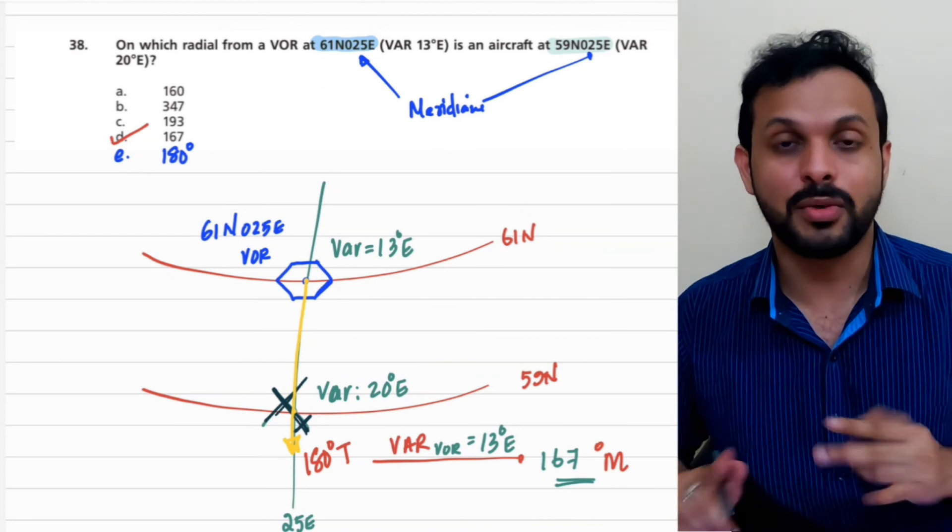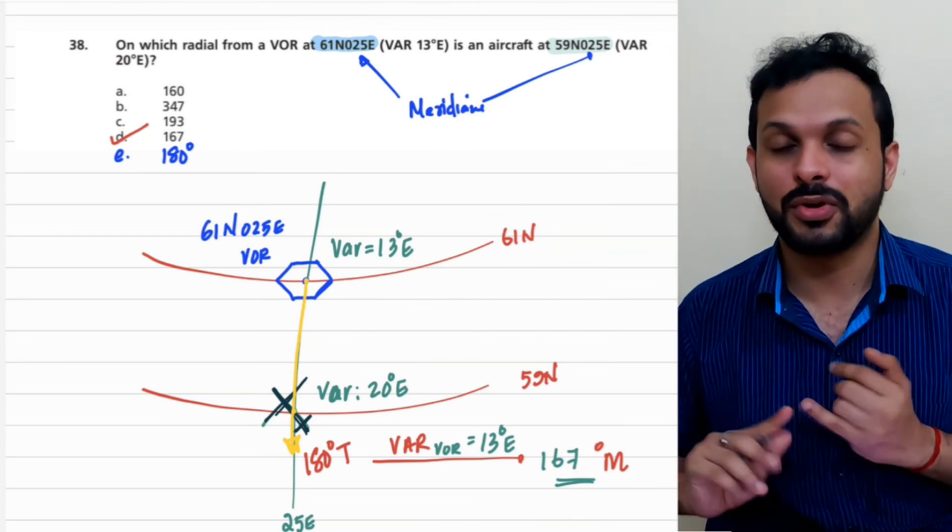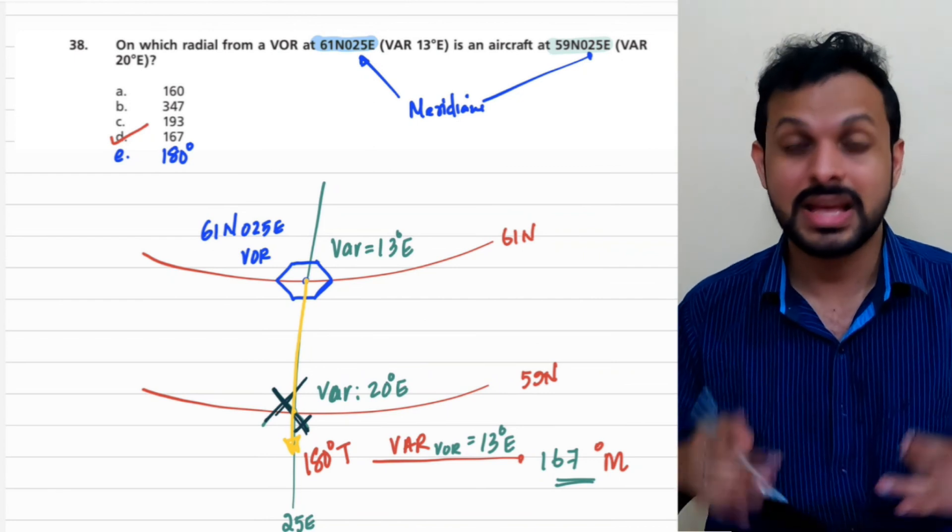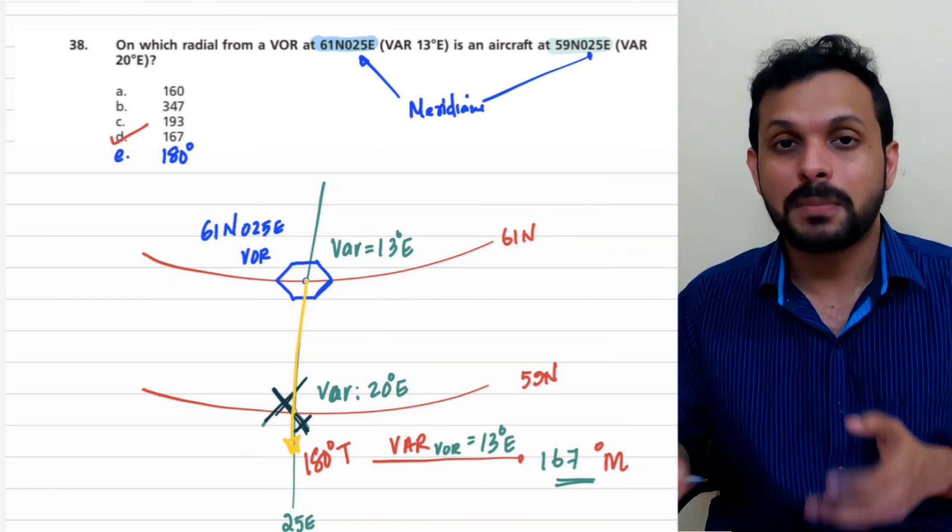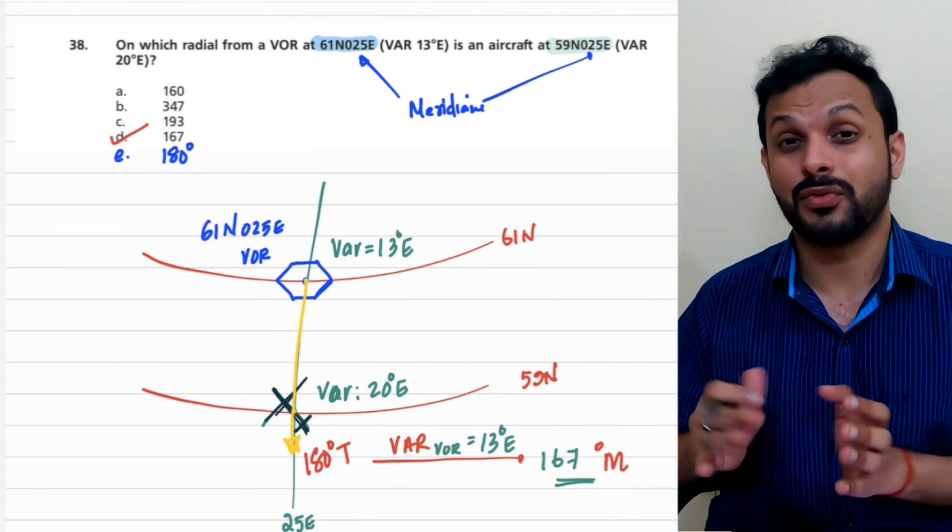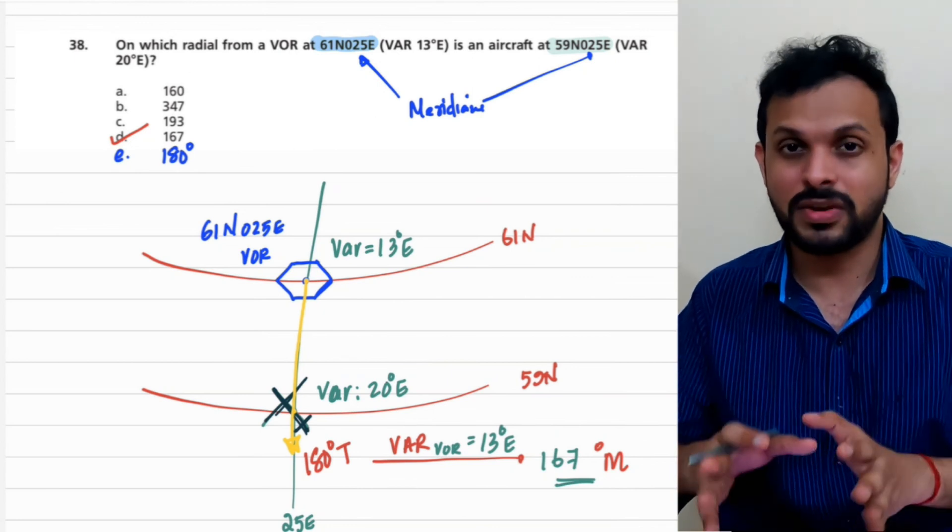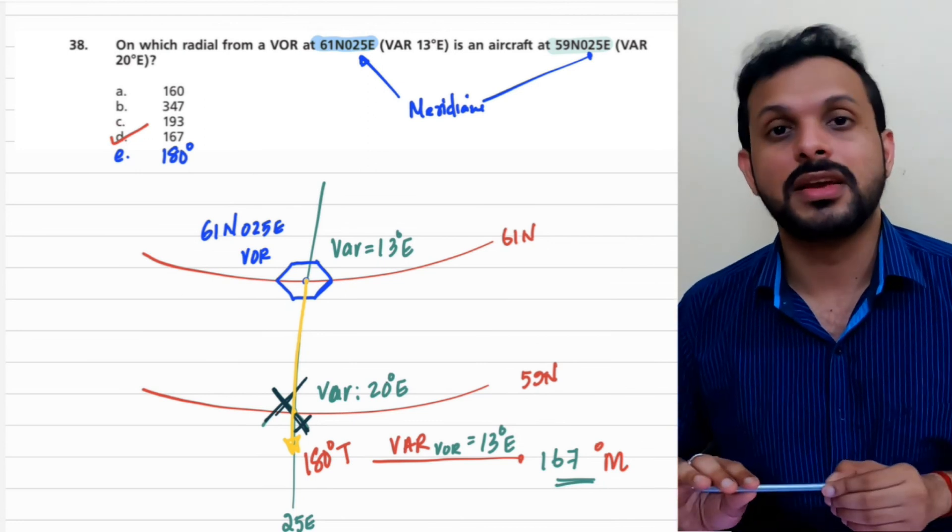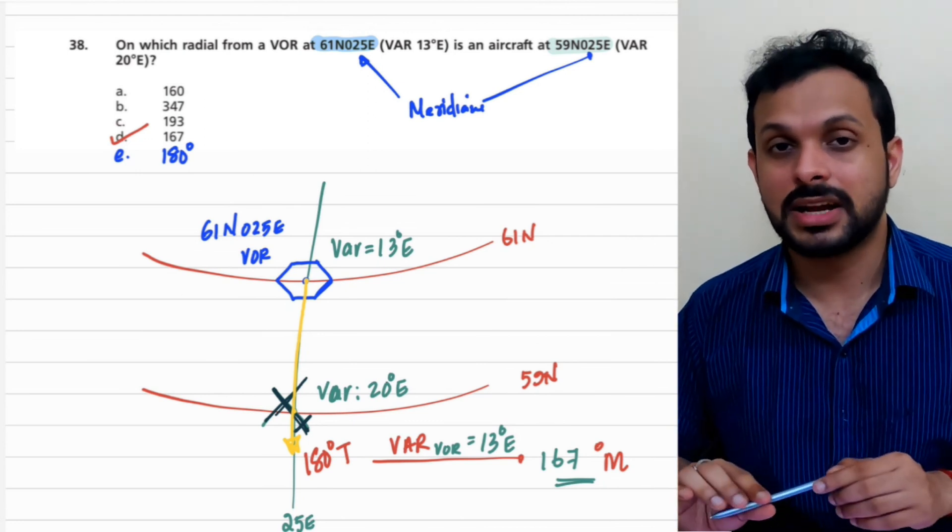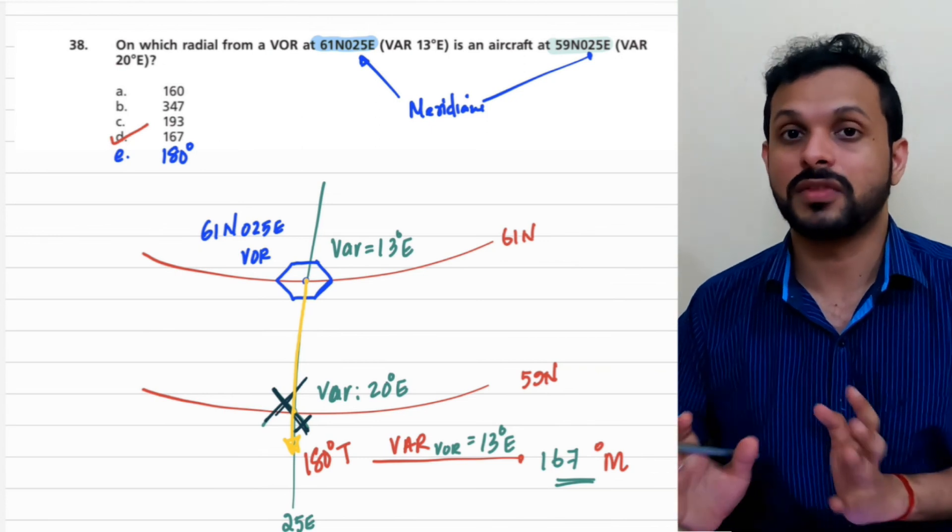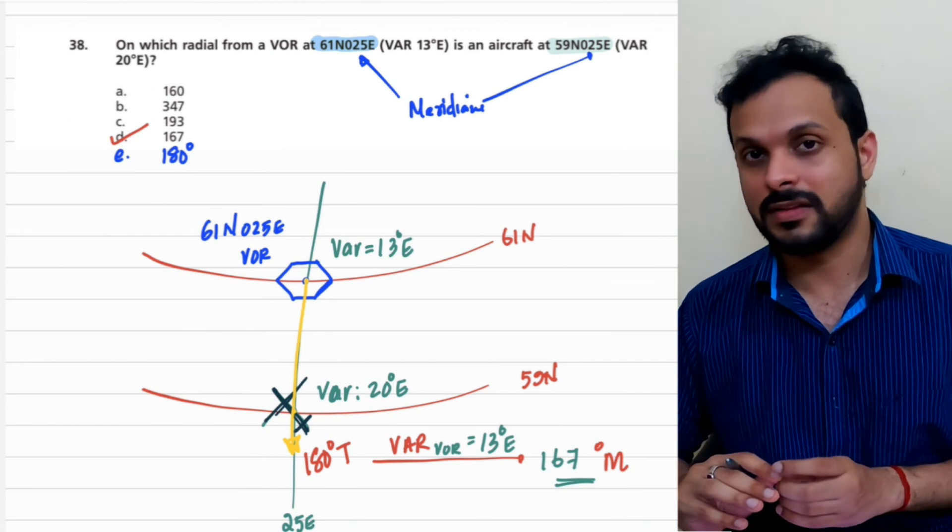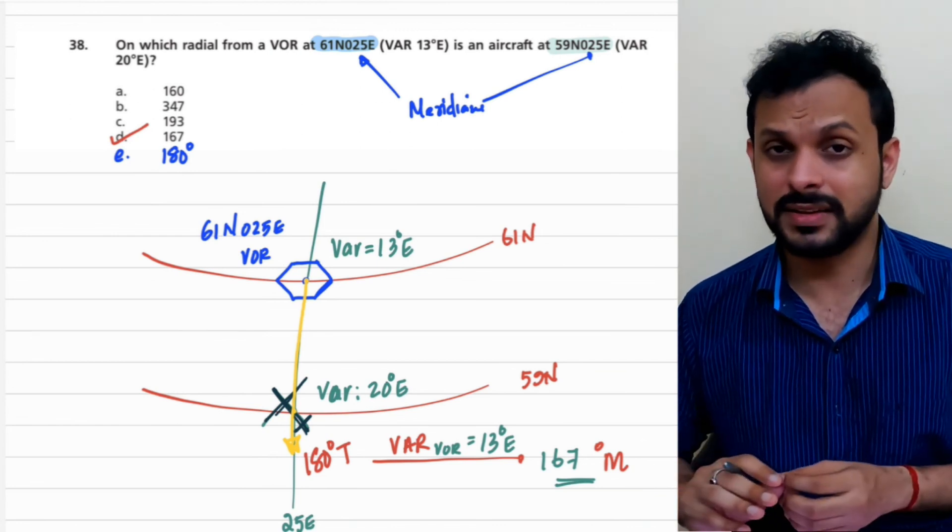So two different things to understand here. One: you have to apply variation because whatever you get from the chart is true and what you need is a radial which is magnetic. Second point: to make it magnetic you have to apply variation. And for a VOR-based system, the variation is always at the VOR, V for V. In case of an NDB/ADF system, the phase comparison is basically done at the ADF antenna which is there on the aircraft. And for that reason, in case of those systems, we use the variation at the aircraft or basically at the ADF antenna.